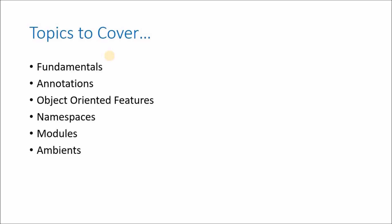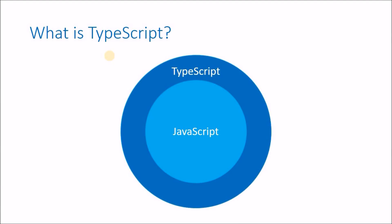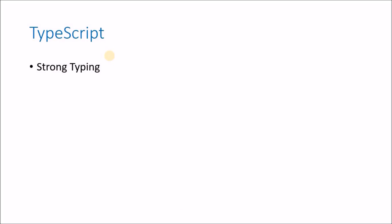Now the first question you might ask is: what is TypeScript? TypeScript is nothing but a superset of JavaScript. So if you are familiar with JavaScript, all the code that you write in JavaScript is valid in TypeScript. TypeScript is not an entirely new language — it is just a superset of JavaScript with some additional features. The first feature is Strong Typing. In languages like Java or C Sharp you need to define the type of the variable first, but in JavaScript that is not required. In TypeScript it is optional.